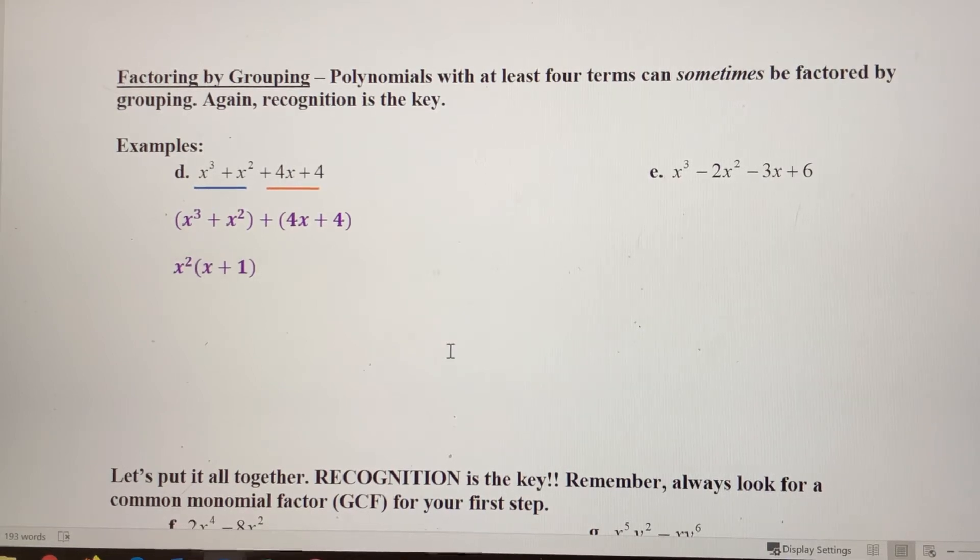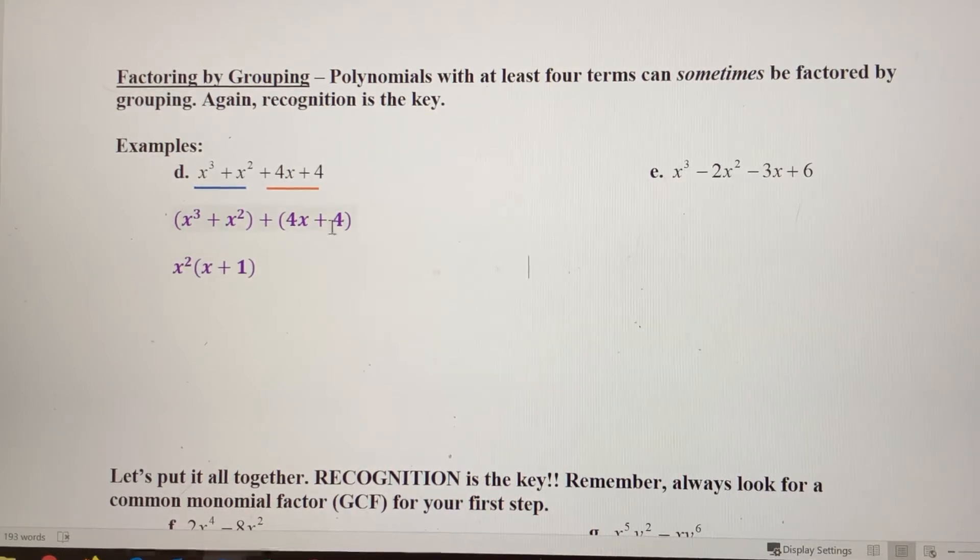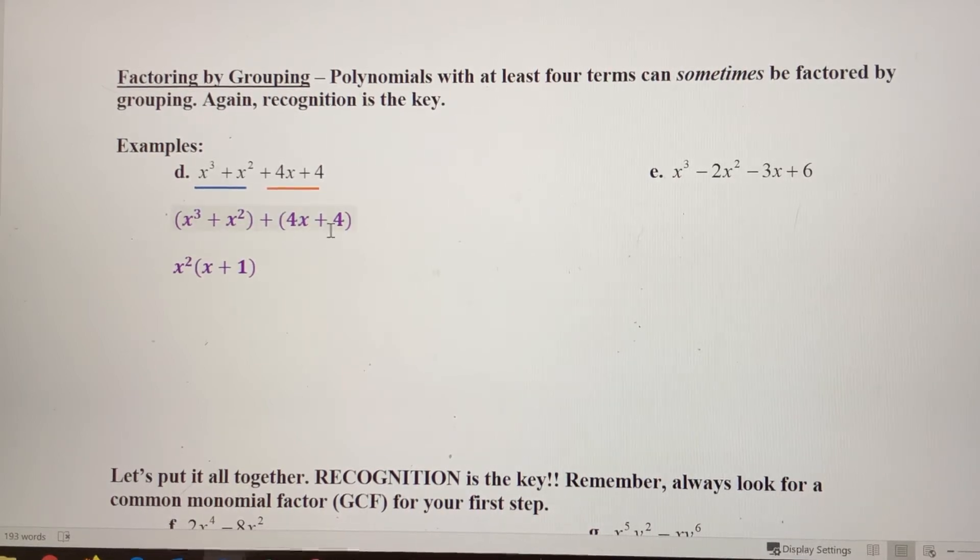Now when we do the same thing with this binomial, what we're hoping for is that what's left in parentheses matches what we ended up with here. Let's see if that happens. If I look at these two terms, they have a four in common, so let's take a four out. And when I do, magically those two binomials match up.